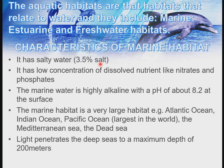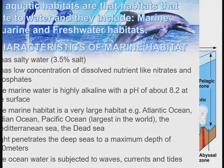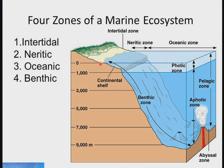Light has the ability to penetrate in the marine habitat to a depth of about 200 meters. The ocean water is also subjected to waves, currents, and tides. These are some of the major characteristics of the marine habitat. There are major ecological zones of the marine habitat.